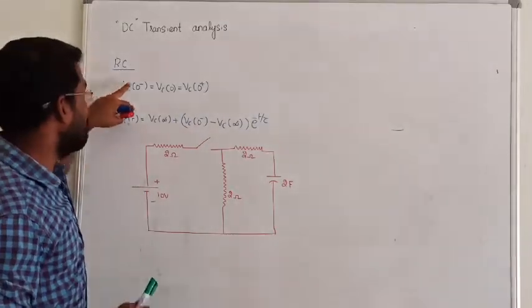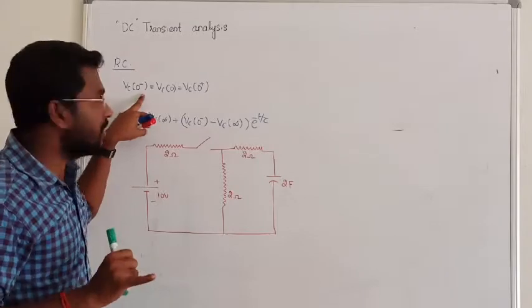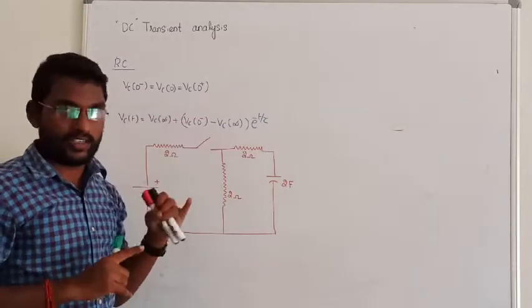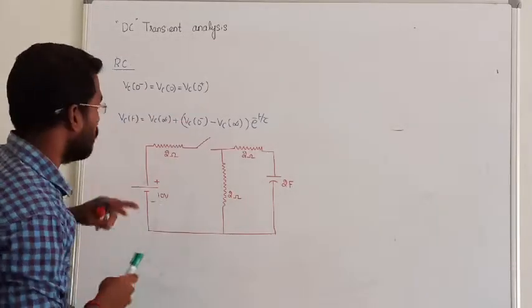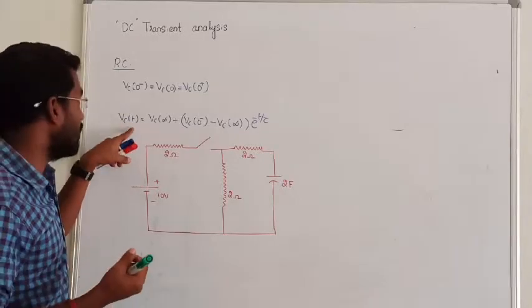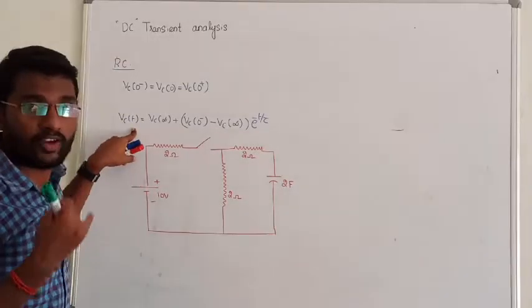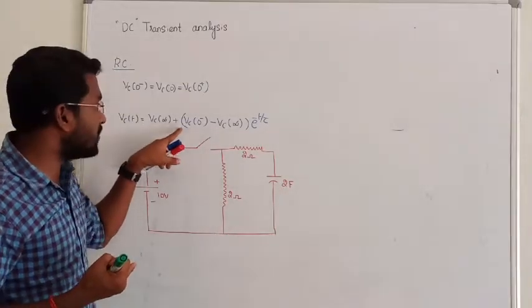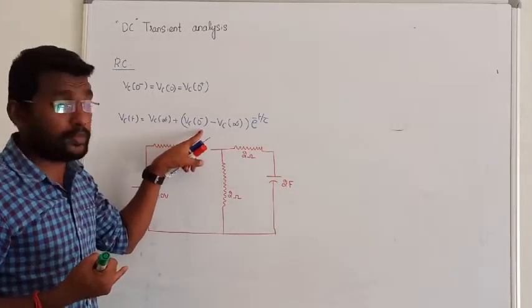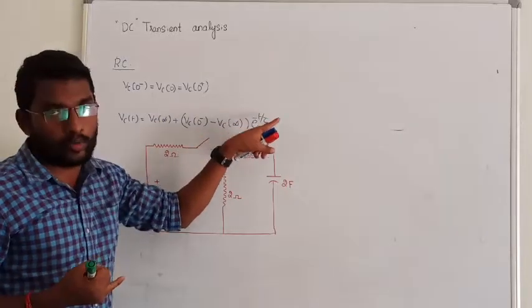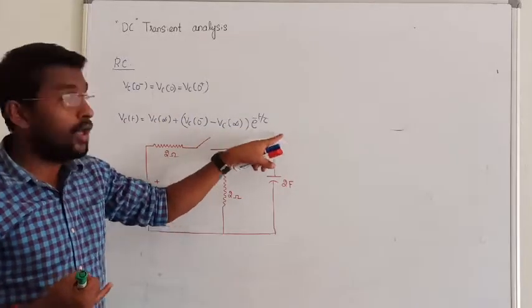For the capacitor, VC(0⁻), VC(0), and VC(0⁺) are all equal — that is the first condition. The general expression is: IL(0⁺) = IL(0⁻) minus IL(0) into e^(−t/τ). That is for the capacitor.